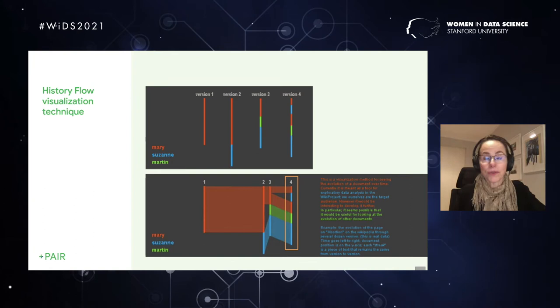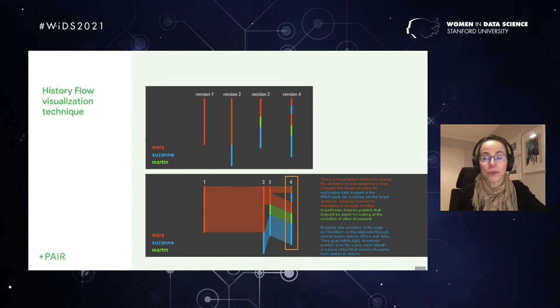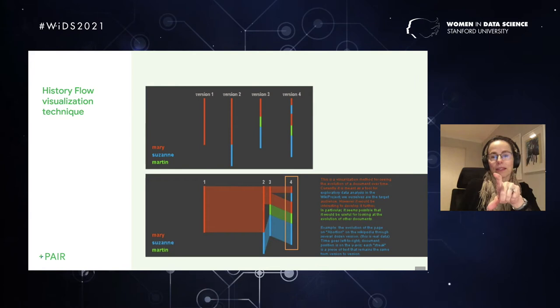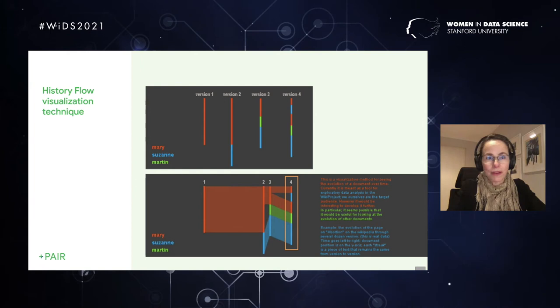The other thing I can do is I can highlight any of the versions, and I can see the text on the right, colored by the authors. And so now what we're going to do is actually watch a demo of this visualization in action.